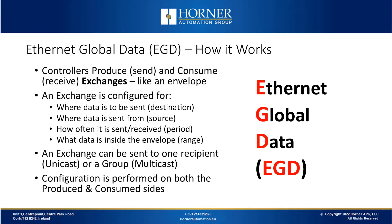With EGD, controllers produce (or send) and consume (or receive) what are called exchanges. You can think of those like an envelope. An exchange needs to be configured for where the data is to be sent or its destination, where the data is going to be sent from or the source, and how often the data is going to be sent and received. It must also be configured for what data is going to be inside the envelope, which is called the range. An exchange can be sent to one recipient, which is a unicast, or to multiple recipients, which is called a multicast. Configuration is required on both the produce and the consume side.